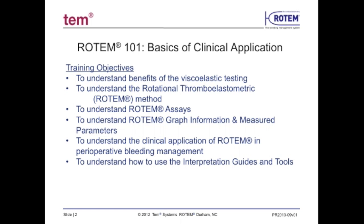The educational objectives for this module are as follows: understanding the benefits of viscoelastic testing versus traditional lab tests; understand the rotational thromboelastometric, or Rotem, method; understanding current offerings of Rotem assays; understand how to read Rotem graph information and measured parameters; understand the clinical application of Rotem in perioperative bleeding management; and understand how to use the interpretation guides and other tools available at the clinical point of care.